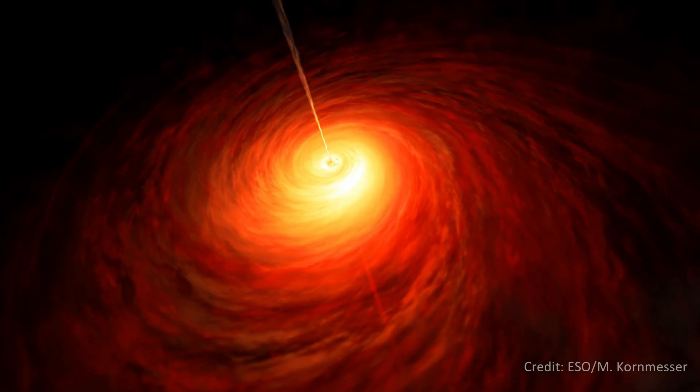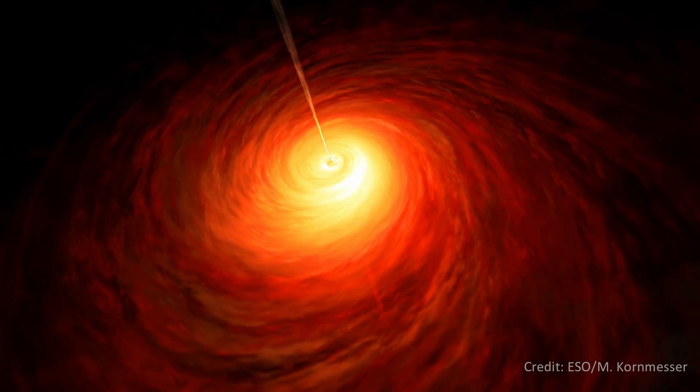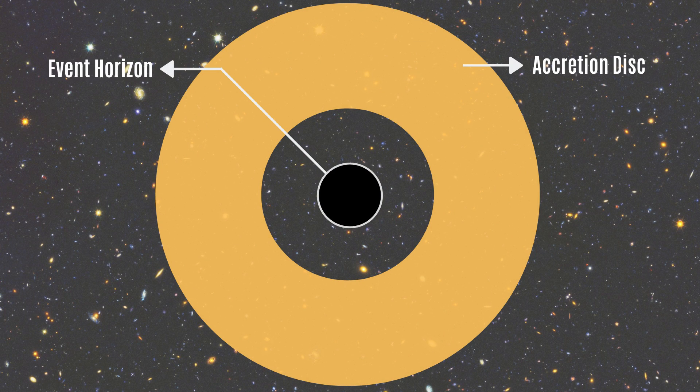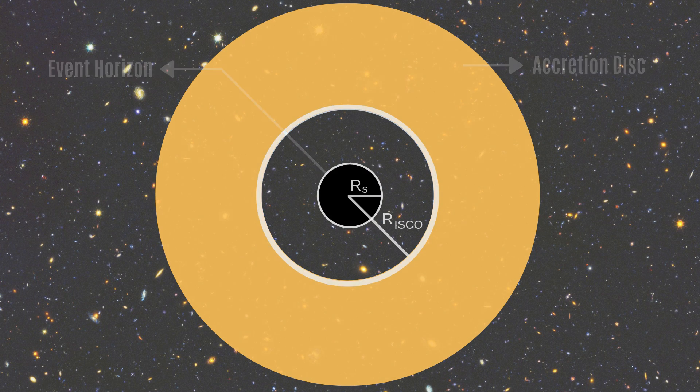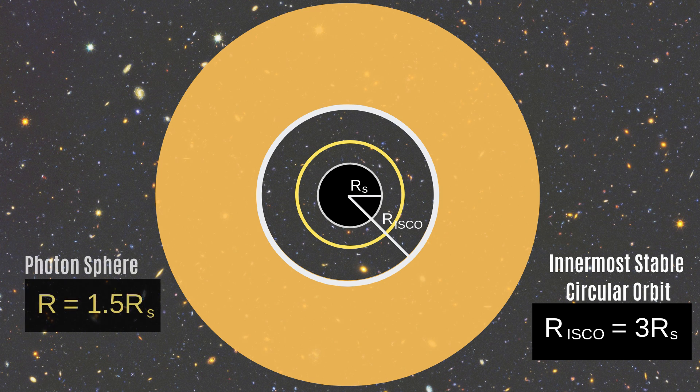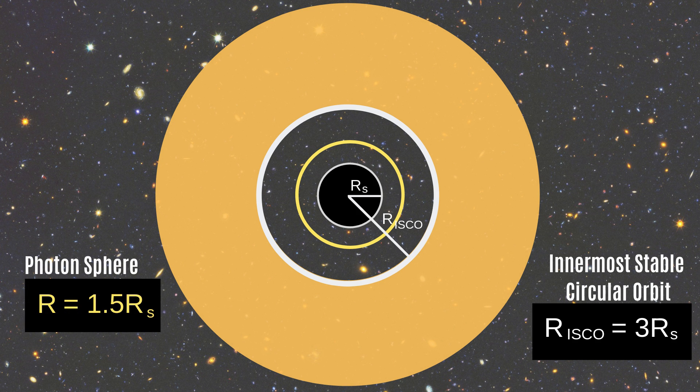Now it is possible for an object to avoid falling into the black hole if it can find a stable orbit. The innermost stable circular orbit is at a distance of around three Schwarzschild radii. For the case of light, which has zero rest mass, this stable circular orbit is even smaller. It is at a distance of around 1.5 Schwarzschild radii. That means if light is orbiting the black hole at this distance, then it can keep on orbiting the black hole forever in a circular orbit. This is known as the photon sphere.